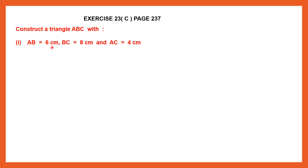The first one: AB equals 6 centimeters, BC equals 8 centimeters, and AC equals 4 centimeters. As you can see, we have been given the length of the sides. There are no angles mentioned here — it's only in centimeters, meaning we are talking about the length. So the first thing we can do is draw a rough figure just to get an idea of what our triangle should be like.